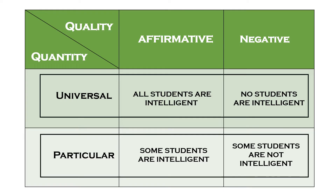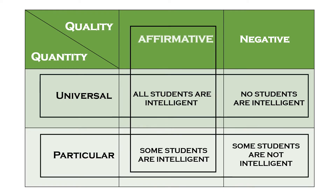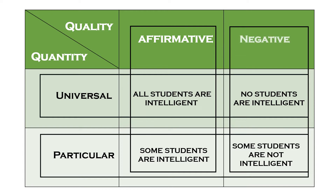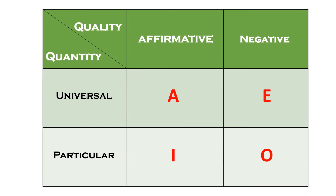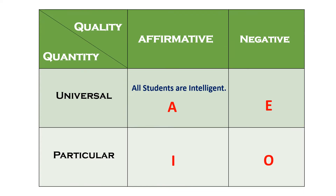In terms of quality, a statement is affirmative if it is a positive statement, and negative if it has the words 'no' or 'are not.' A universal affirmative statement is denoted by the letter A, while E denotes a universal negative statement, I denotes a particular affirmative statement, and O denotes a particular negative statement. So the statement in our question, 'all students are intelligent,' is a universal affirmative statement, and is denoted by the letter A.